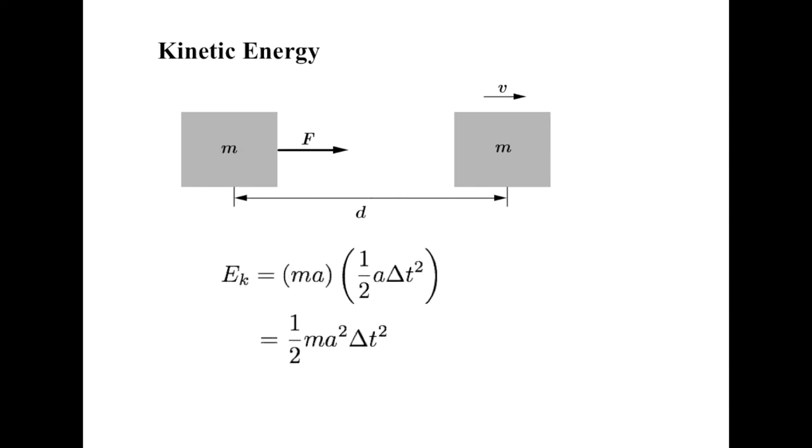But I don't want acceleration, I want speed, and I sure as heck don't want that time interval in there. Fortunately, it's easy to get rid of, as acceleration is simply the change in velocity divided by the time interval. And since we started our object from rest, it's just the final velocity divided by time. Substituting in, we can see that the delta t's just divide away, leaving us our kinetic energy formula.